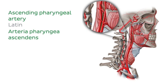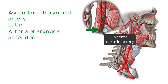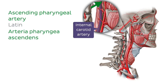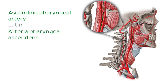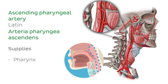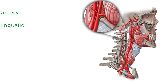The second branch is the ascending pharyngeal artery. It is the smallest branch of the external carotid artery. It arises from the medial surface of the external carotid artery near its base and ascends between the internal carotid artery and the pharynx to reach the base of the cranium. As its name suggests, this artery supplies the pharynx as well as other nearby structures including the soft palate.